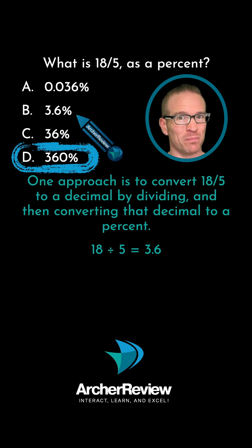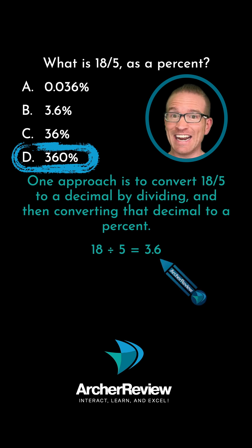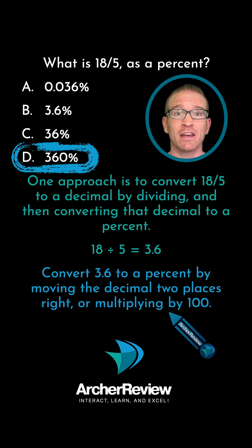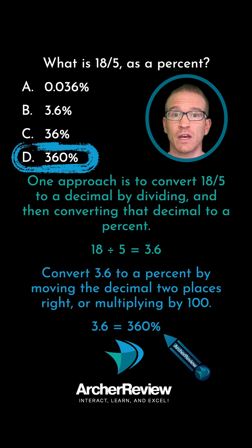But be careful — B is not the correct answer. B says 3.6%. That is different than 3.6. We need to take that 3.6, which is in decimal form, and convert it to a percent by either multiplying the decimal by 100 or moving the decimal two places to the right.